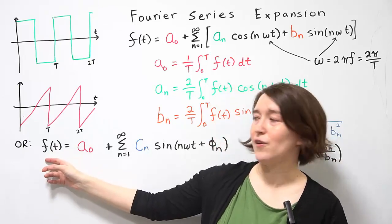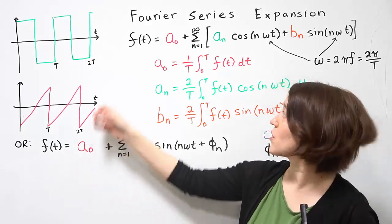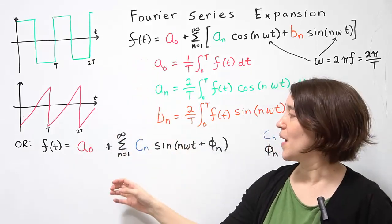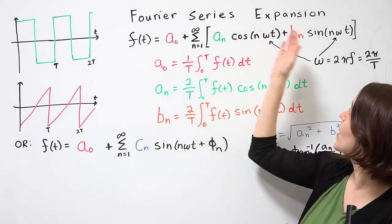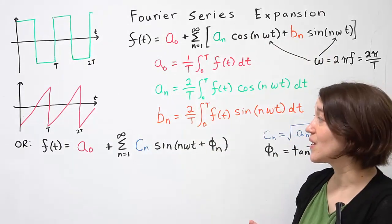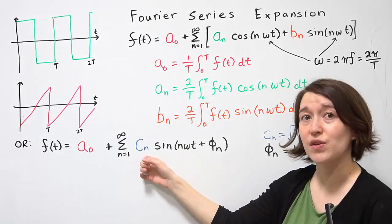The same function, our periodic function, and we start with the same DC term, so a₀ shown here, and we combine the cosine and the sine terms together into one term, which means that our coefficient value will change.